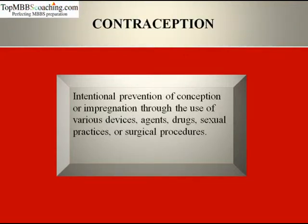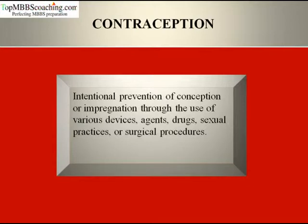In birth control, first comes contraception. Contraception is the intentional prevention of conception or impregnation through the use of various devices, agents, drugs, sexual practices or surgical procedures. Contraception is a temporary or permanent measure that prevents pregnancy or conception.